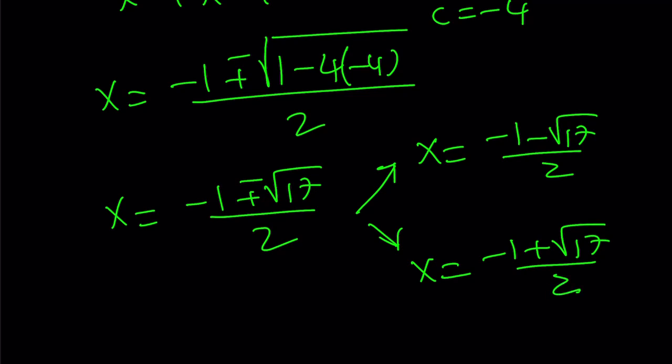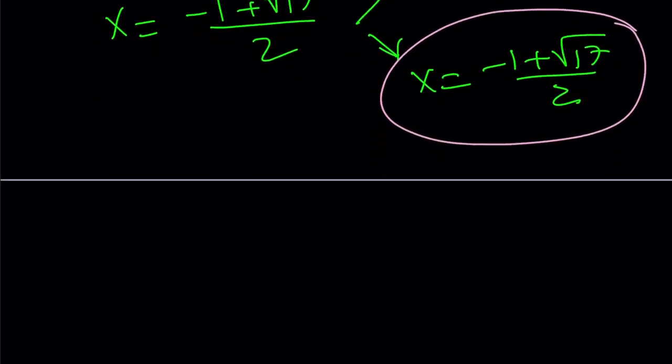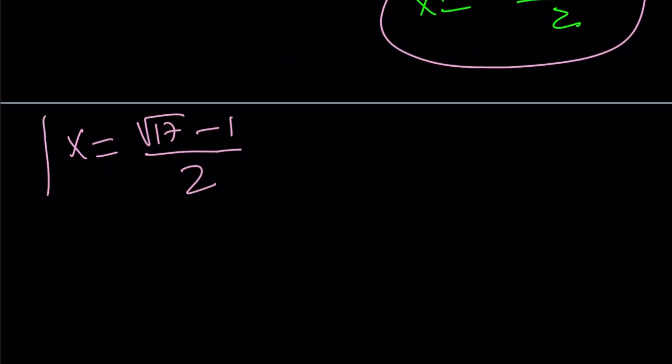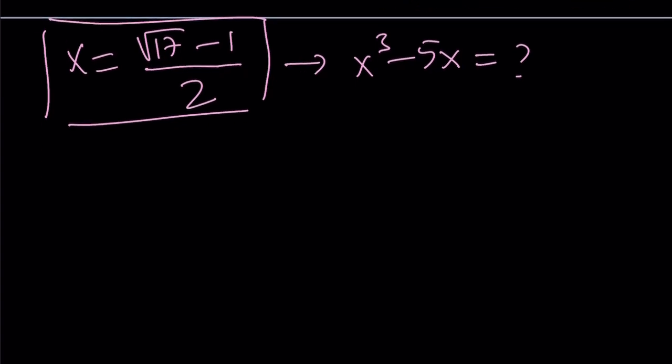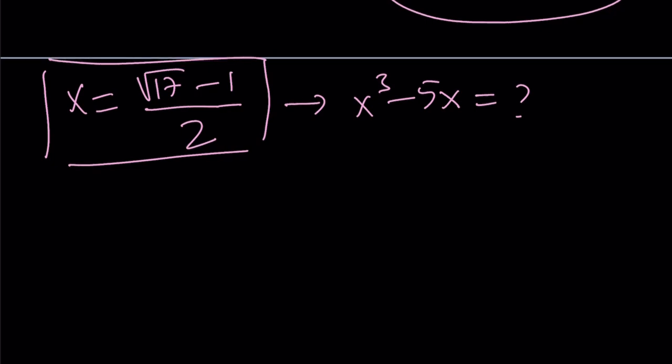Which one can I use? You can use either one, but I'm going to use the second one because it's more positive. If you use the first one, you'll get the same thing. We're looking for a numerical value, by the way. So I'm going to take x to be root 17 minus 1 over 2. Now, I'm going to plug this into my expression because I'm trying to evaluate x cubed minus 5x for the x value that satisfies the first equation.